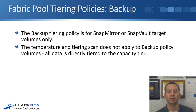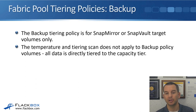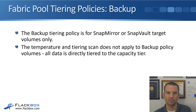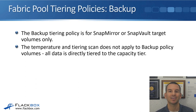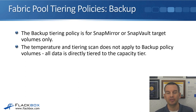The next policy is the backup tiering policy, which is for SnapMirror or SnapVault target volumes only — on the destination side. With the backup policy, the temperature and tiering scan does not apply to those volumes; all data is directly tiered to the capacity tier.